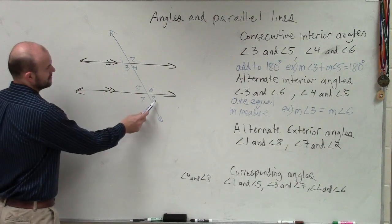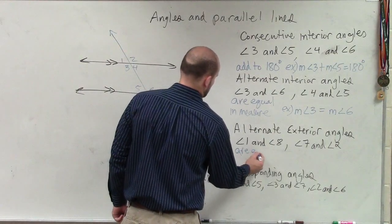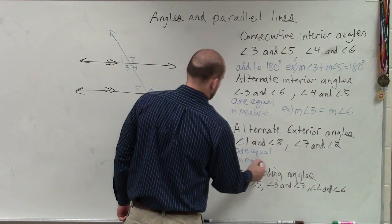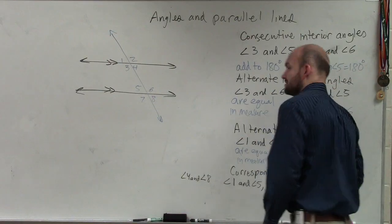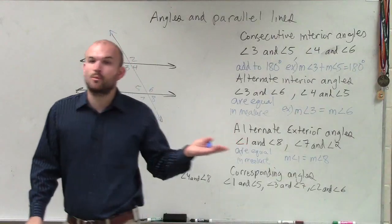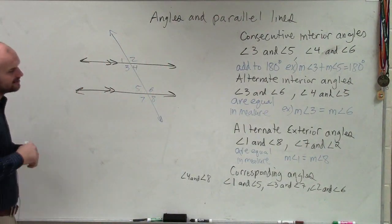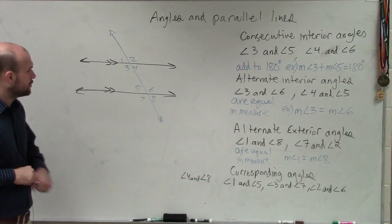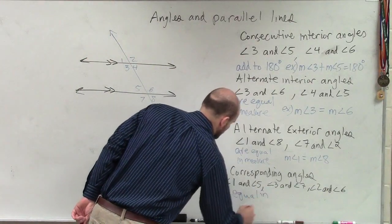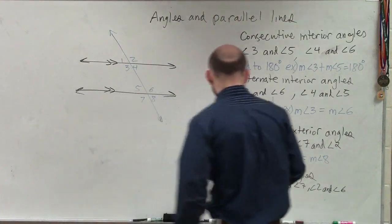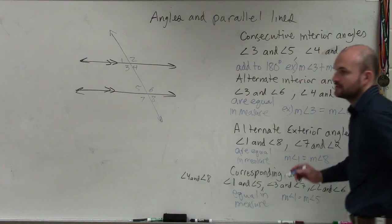Alternate exterior angles are also equal. My example here is the measure of angle one is equal to the measure of angle eight. So if I know I have parallel lines and a transversal, and I can determine what two angles are alternate exterior, I know that their measures are equal in value. And the last one — corresponding angles: angle one, angle five, angle three, angle seven. The measure of angle one is equal to the measure of angle five.